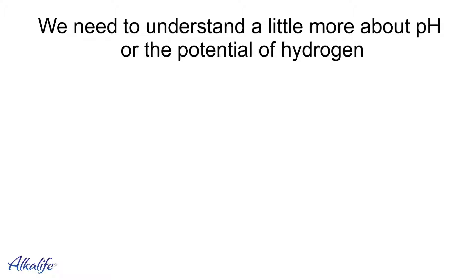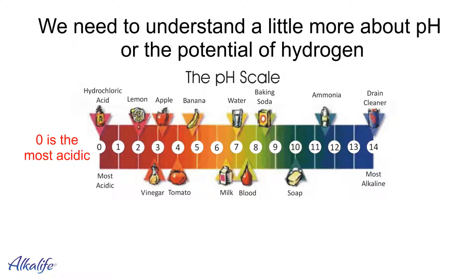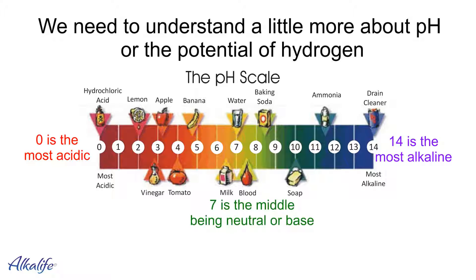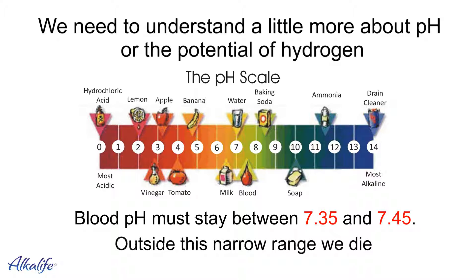So we need to understand a little more about pH, or the potential of hydrogen. Here's the pH scale from 0 to 14. 0 is the most acidic, 14 is the most alkaline, and 7 is in the middle, being neutral or base. Our blood pH must stay between 7.35 and 7.45. Outside of this narrow range, we die.